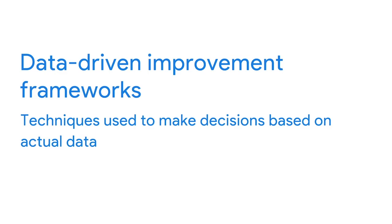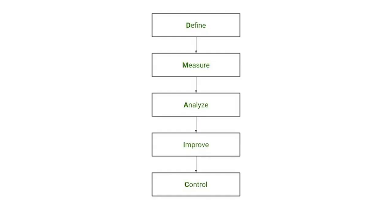In the last video, I introduced the concept of continuous improvements and explored how working in a controlled environment can optimize your outcomes. In this video, we're going to keep uncovering methods for continuous improvements, starting with data-driven improvement frameworks — techniques used to make decisions based on actual data. The first framework we'll cover is DMAIC, which stands for Define, Measure, Analyze, Improve, and Control, mapping out five steps you can take when working toward continuous improvements.